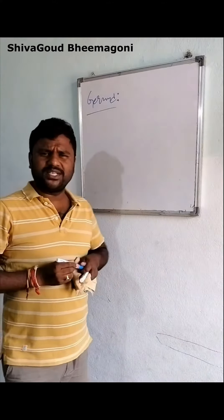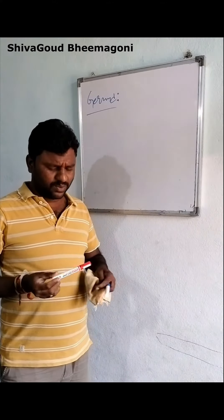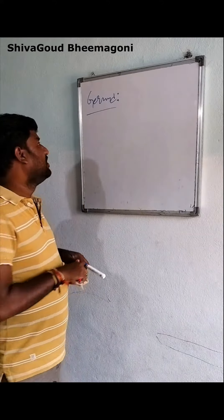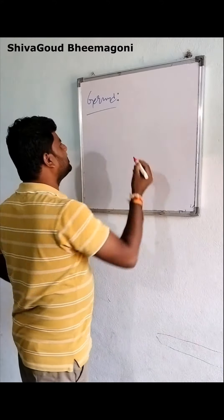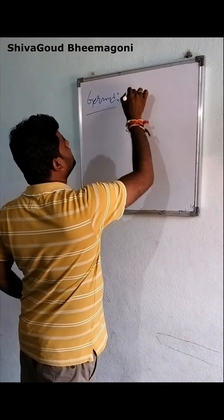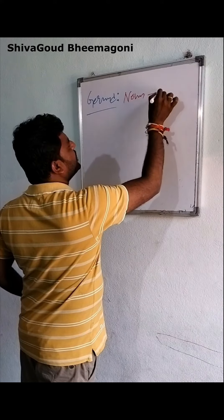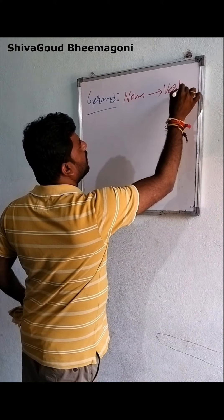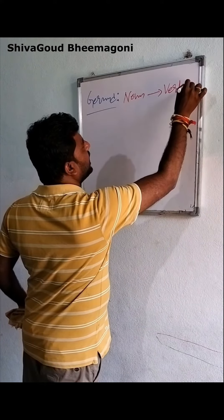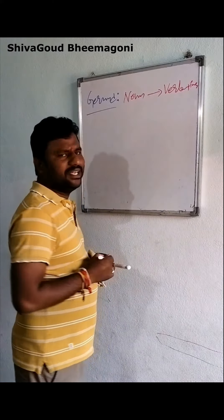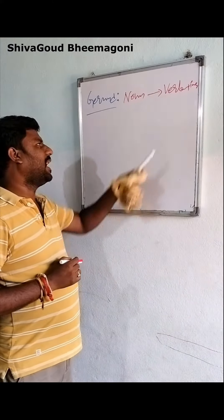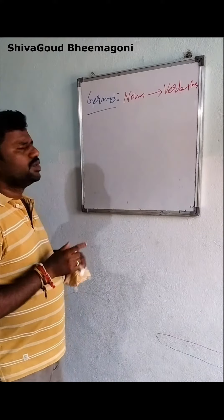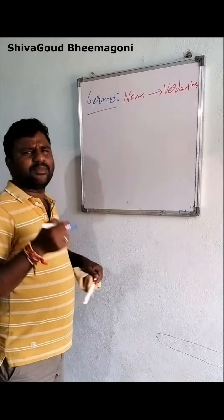Most students may get confused and find it hard to recognize the gerund. So, what is gerund? Gerund is simple. Gerund is a noun which is formed from a verb by adding -ing to the verb. It will become a gerund. Let us see some examples — I will make it easy.